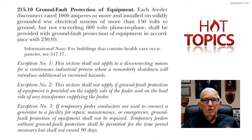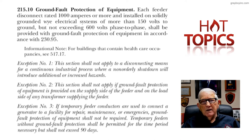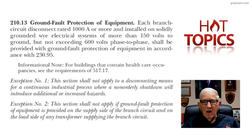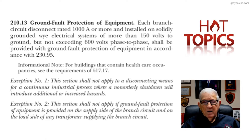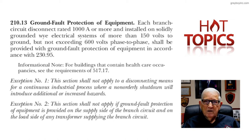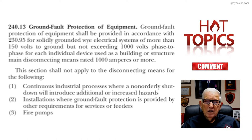230.95 is on page 96. And then you want to look at branch circuits — is ground fault protection ever required on a branch circuit? That's a question we get quite a bit, and of course that's in 210.13. 210.13 is on page 65 of the NEC. We also get questions: is there ever a design situation where I could completely eliminate the ground fault protection required by 230.95, 215.10, or 210.13? I like to refer the user of the NEC to 240.13 on page 100, and look at items one and three.